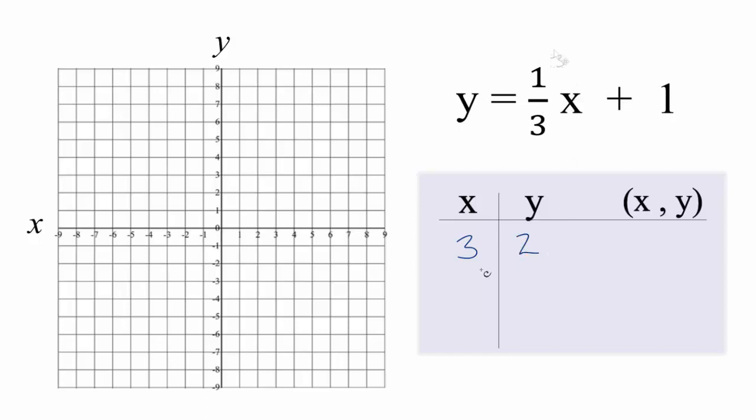Zero is always a good number to put in because we know it'll fit on our graph. One-third times 0 is 0, plus 1 gives us 1. Let's put negative 3 in: one-third times -3 gives us -1, plus 1 is 0.